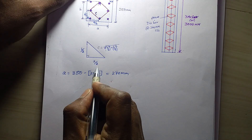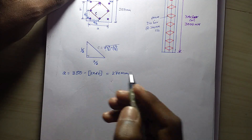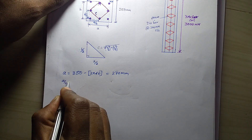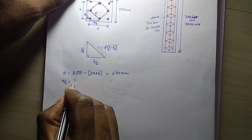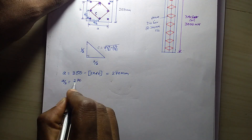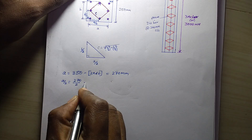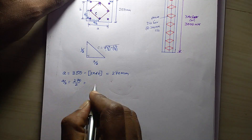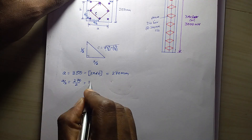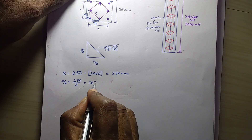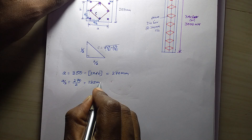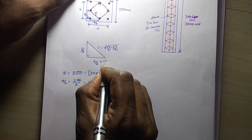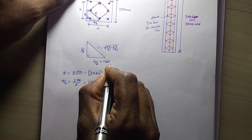So the answer is 'a by 2'. A by 2 is equal to the value, the other value divided by 2 is equal to 135mm. So a by 2 is equal to 135mm.